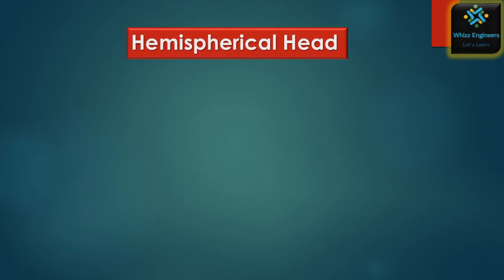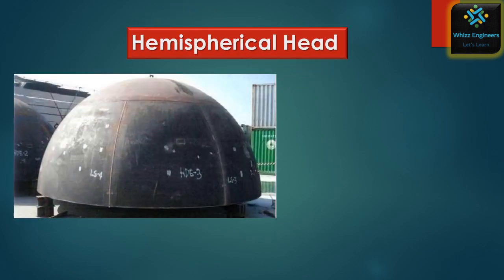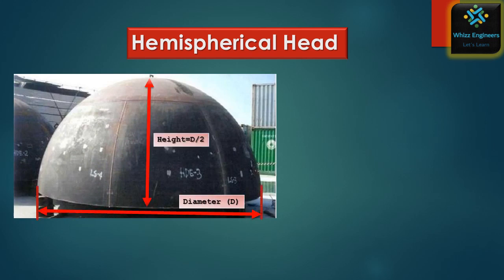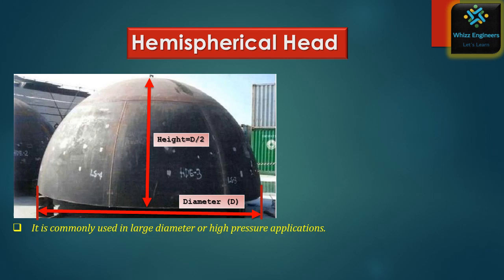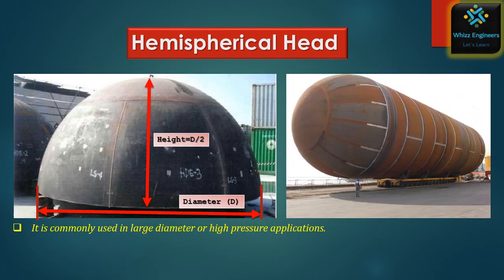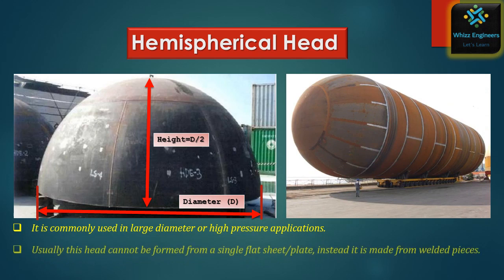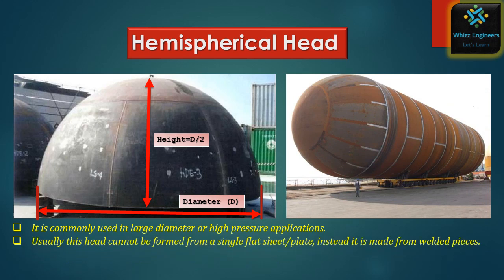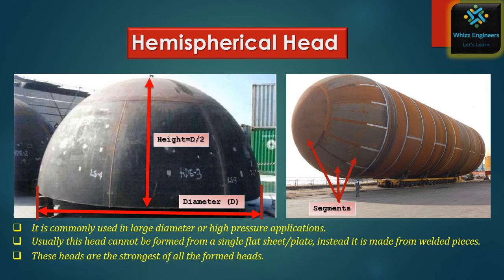The next type is the hemispherical head. The geometry of this type of head is quite simple as it is a half sphere, so the height of the head is equal to half of the diameter. These heads are commonly used in large diameter and high pressure applications. Usually they cannot be formed from a single plate; instead they are made from welded pieces or segments. These heads are the strongest of all formed heads, and their thickness based on shell design conditions will be less than the shell thickness.